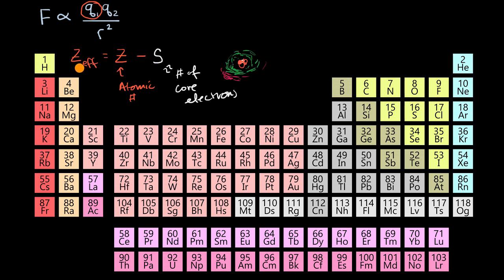Using that roughly as a way to think about Z effective, what are the trends in the periodic table? For the group one elements: hydrogen has no core electrons and atomic number one, so one minus zero gives an effective charge of roughly one. Lithium, atomic number three minus two core electrons in 1s, also gives an effective charge of one. So roughly speaking, all the group one elements have an effective charge of one.